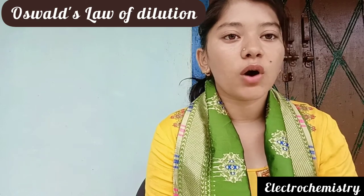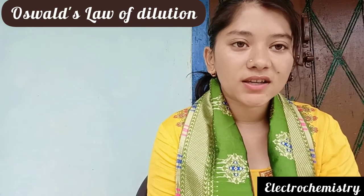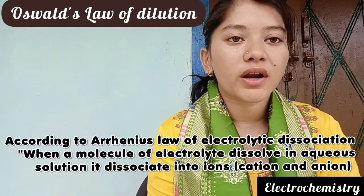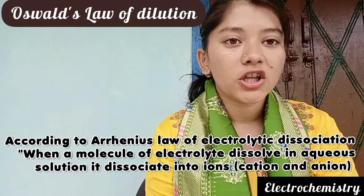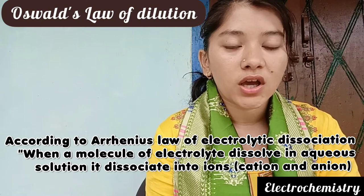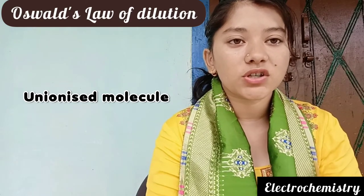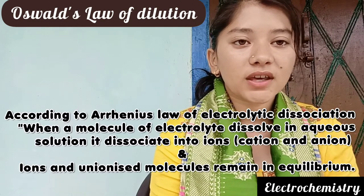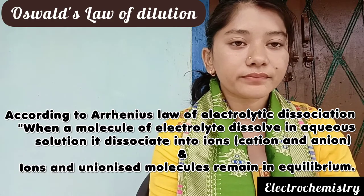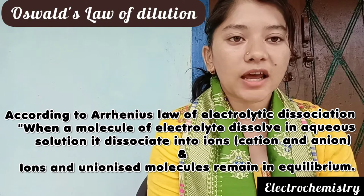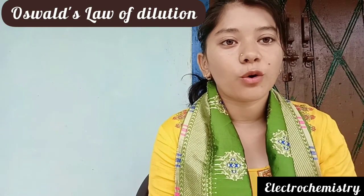This law came after the electrolytic dissociation theory. Arrhenius said that when an electrolytic molecule dissociates in aqueous solution, there is a point at which ionized molecules and ions establish an equilibrium. Ostwald applied the law of chemical equilibrium to this, and the result is what we call Ostwald's Law of Dilution.